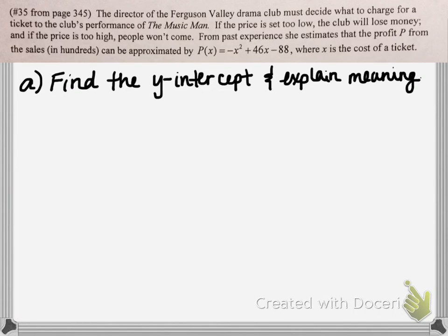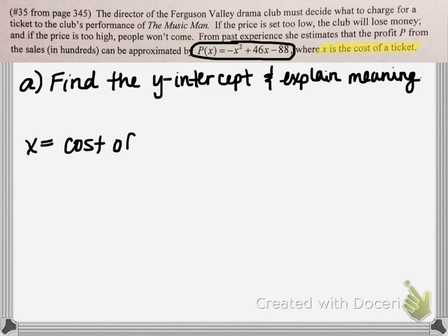For part A on this problem, we want to find the y-intercept and explain its meaning. Any time a function is given, we want to first identify what the variables mean. Our input is the variable x, and if you read along, we see that x is going to be the cost of a ticket. The output, instead of y, is actually the variable p. And p represents the profit — but not the profit in dollars, but the profit in hundreds of dollars.